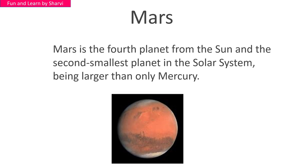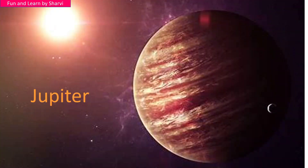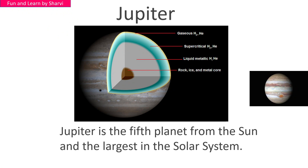So Mars is larger than only Mercury. Let's move ahead with our next planet, Jupiter. Jupiter is the fifth planet from the sun and the largest in the solar system.